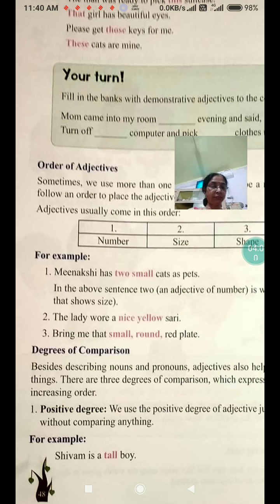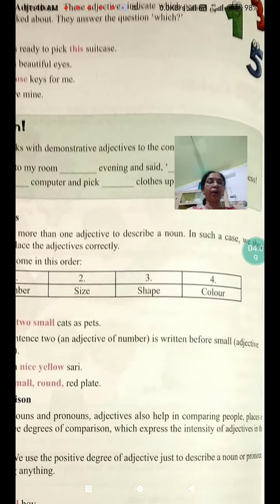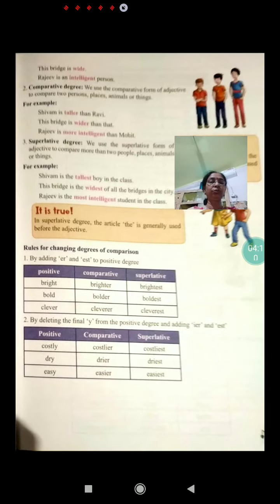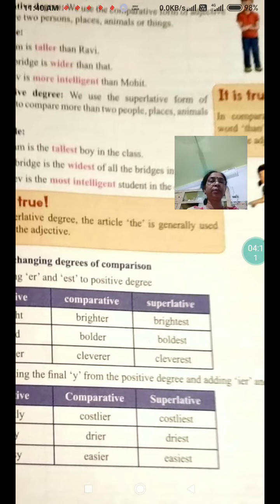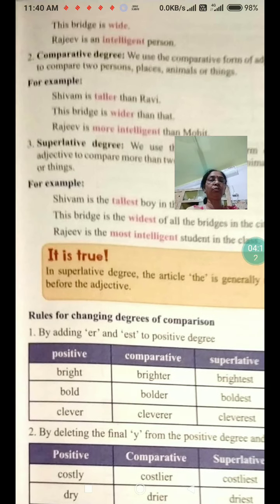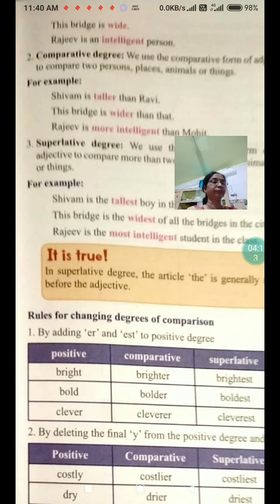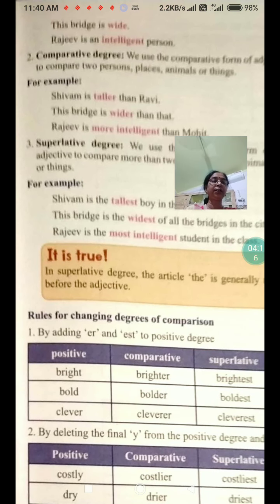Positive degree. We use the positive degree of adjectives just to describe a noun or pronoun without comparing anything. For example: 'Shibam is a tall boy.' This is a simple sentence — no comparison. 'This bridge is white.' 'Rajiv is an intelligent person.'